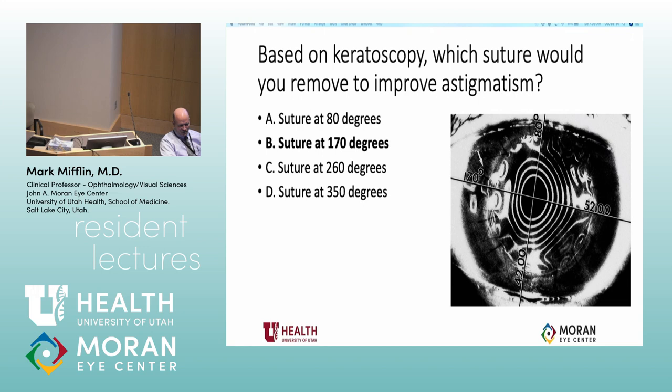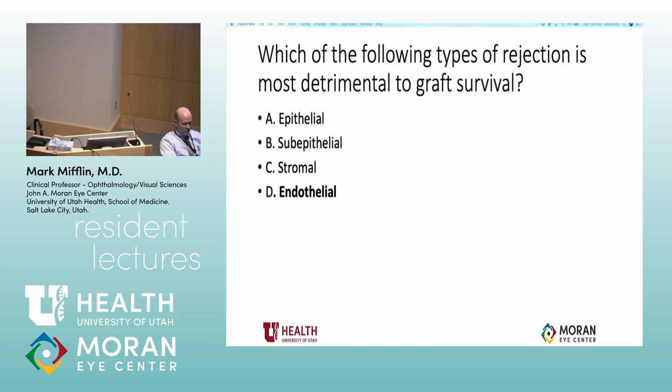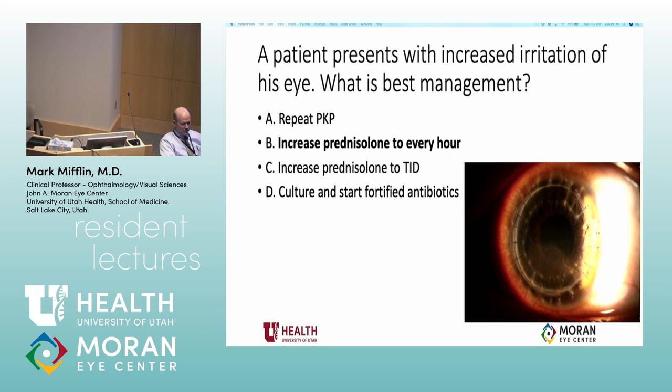Endothelial rejection is the most important type — endothelial cells don't regenerate, so that's the most important type to prevent. This is a Khodadoust line, not a very easy one to see, but you'd want to increase topical steroids to hourly. You could do other things, but that's the best answer.